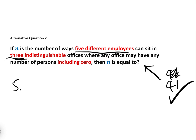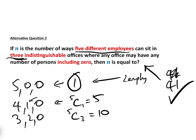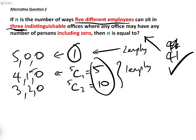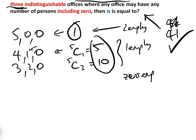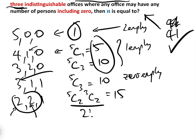Let's verify by hand: five different employees into three indistinguishable offices. We could have five, zero, zero — only one way. Or four, one, zero — five ways of picking that one employee, so 5C1 equals 5. Or three, two, zero — 5C3 ways of picking the three, which equals 10. That covers two empty offices, giving 15 total. For zero empty offices: three, one, one — 5C3 ways, which is 10. And two, two, one — 5C2 times 3C2 divided by two factorial, which equals 15. So zero empty offices gives 25. Adding up: 25 plus 15 plus 1 equals 41. Correct.